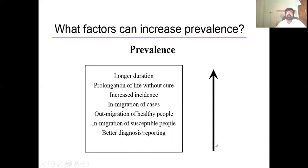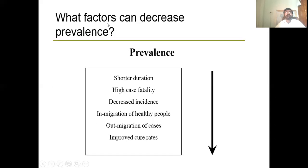Factors that can increase prevalence include: longer duration of disease, as people who live longer with the disease increase prevalence; prolongation of life without cure; new incident cases; in-migration of cases (people coming to the population with the disease); out-migration of healthy people; in-migration of susceptible hosts who quickly develop disease; and better diagnosis and reporting through stronger reporting systems and better laboratories.